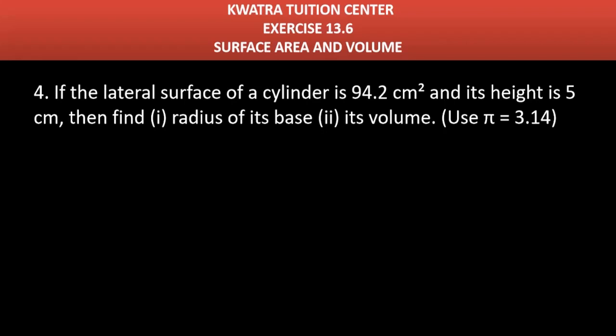Moving to question number 4. It says if the lateral surface area of a cylinder is 94.2 cm², its height is 5 cm, then find the radius of its base.